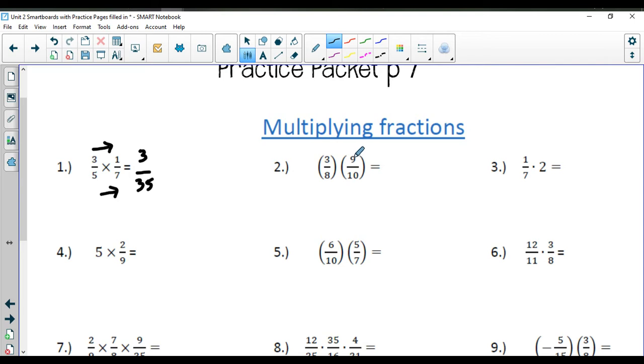For question number 2, you are going to check to see if you can simplify. 3, 10, 8, and 9, nothing to simplify, so 3 times 9 is 27. 8 times 10 is going to give you 80.